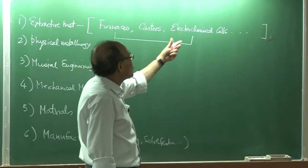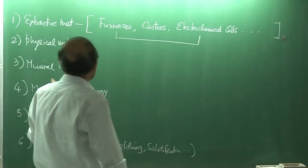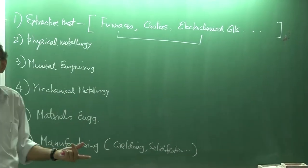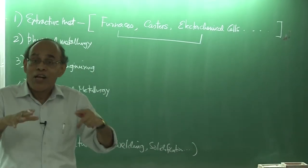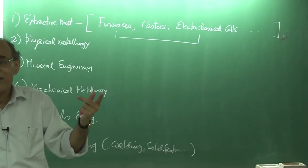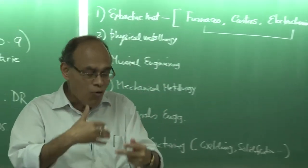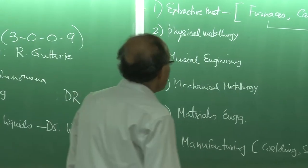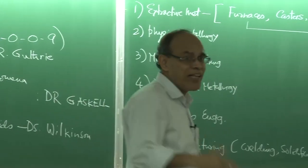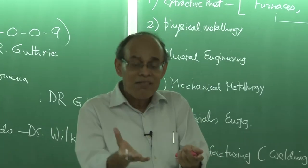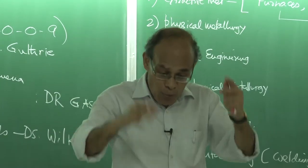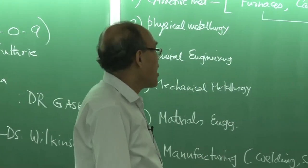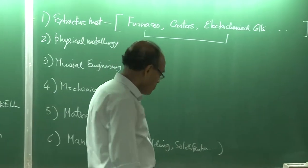In electrochemistry also we find huge application of transport phenomena, because the electrolytic movement and the activities in and around the cathode are immensely controlled by various phenomena that produce heat and local stirring conditions.